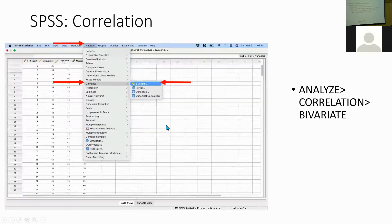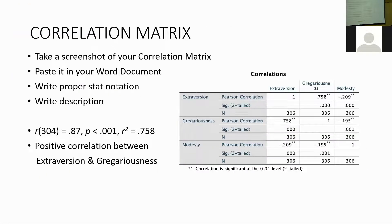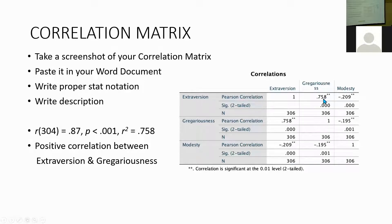I'm going to give an example. This is the kind of stat notation you should be able to extract from the tables. You'll see the sample size is 306 minus 2, and that goes here. For the correlation coefficient and the coefficient of determination, you'll have to do a slight bit of math. The coefficient of determination comes from this number — you take the square root of that number. So this would be 0.87.